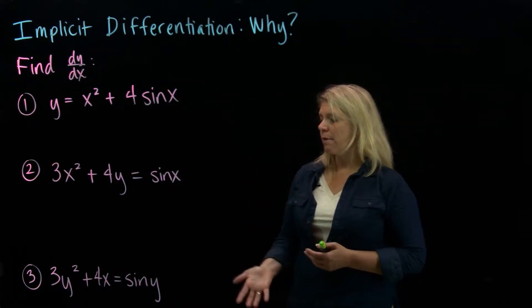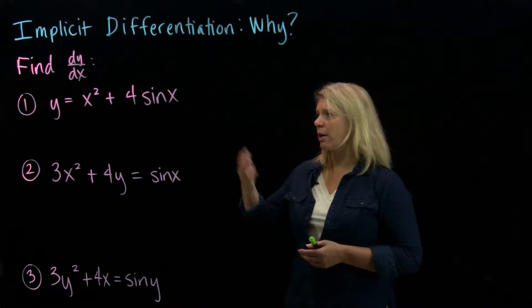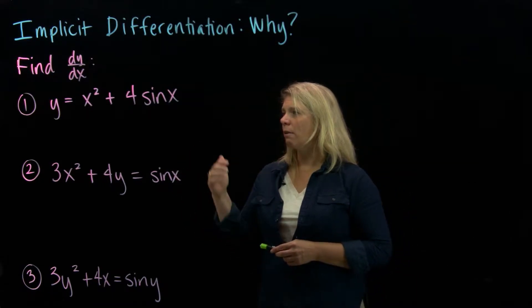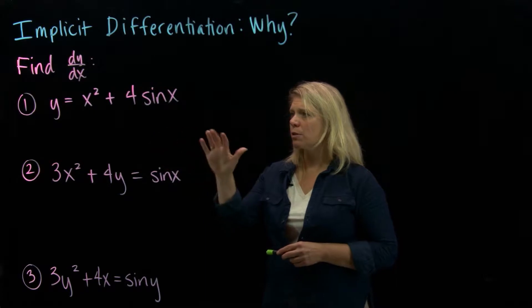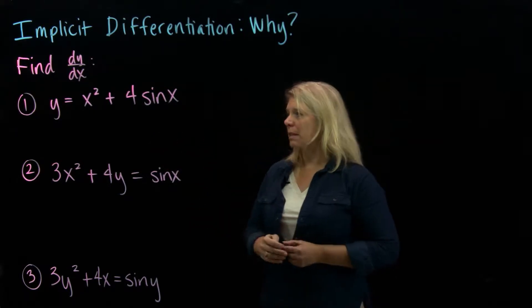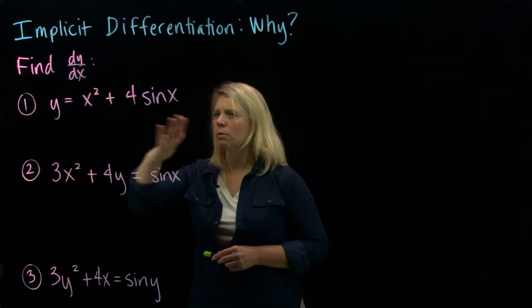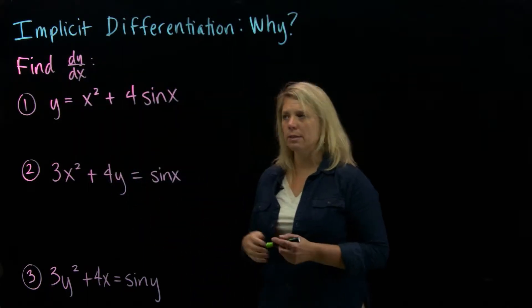So we have three problems here, and the instructions say find dy/dx, so we want to differentiate y with respect to x. This first one is an easy problem at this point, we know how to do that. We've got y equals x squared plus 4 sine x, so we just differentiate that one.